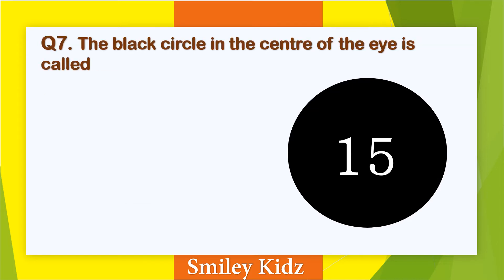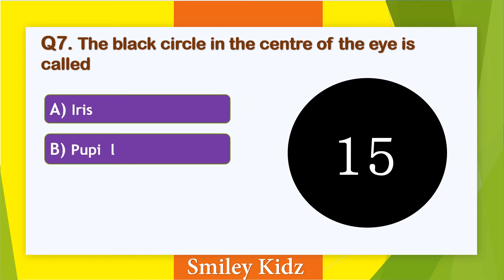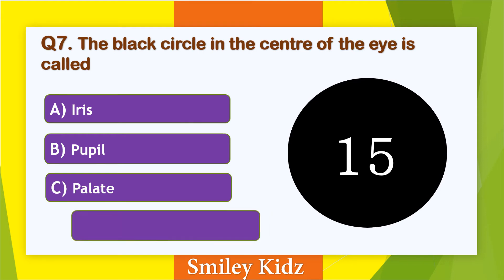Question number 7. The black circle in the center of the eye is called. Options are: A. Iris, B. Pupil, C. Palette, and D. Cornea. Your time starts now.